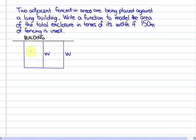The only difference between this particular problem is because it is beside a building, we only need one length of fencing. We have three widths and one length. The relationship, the formula that we're going to use here is area equals length times width.